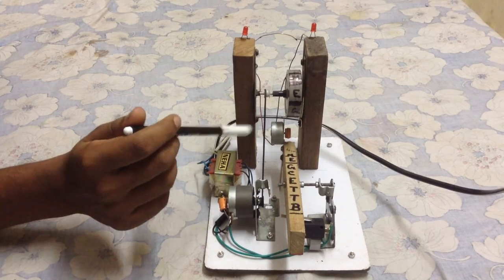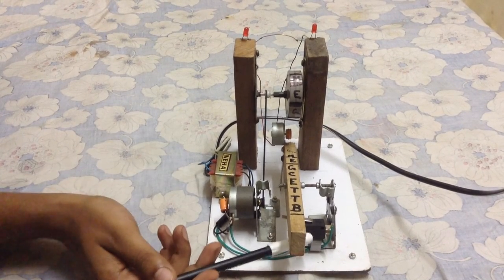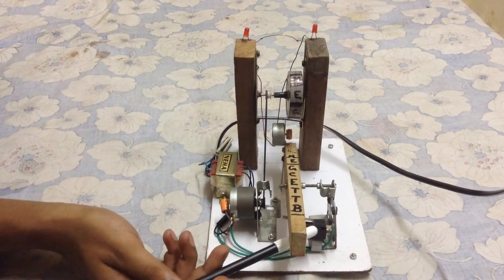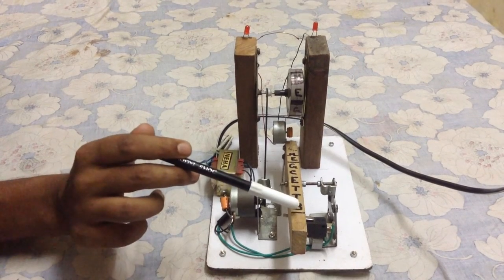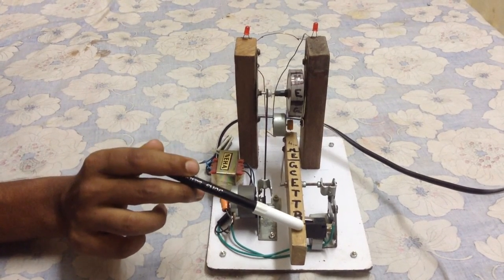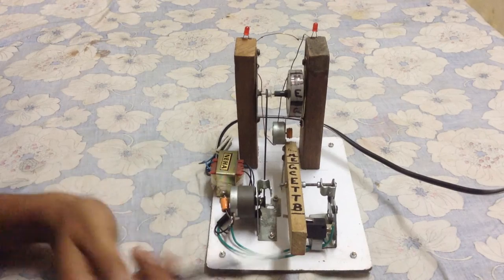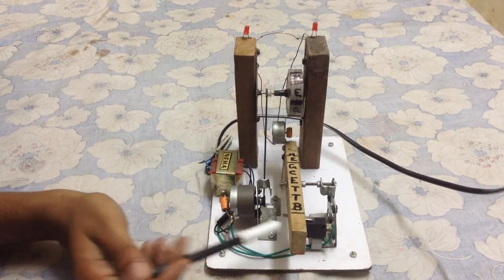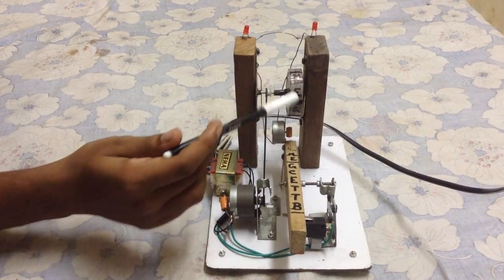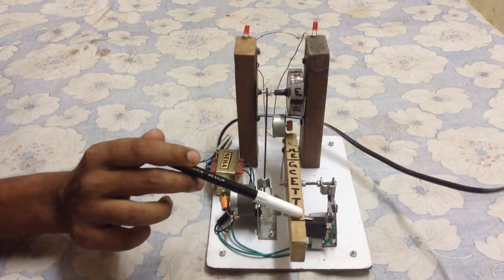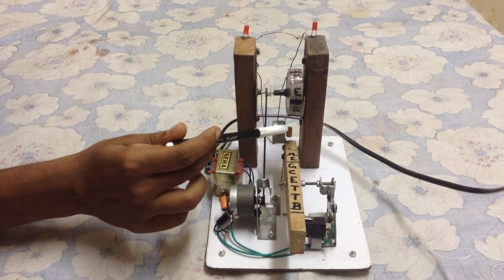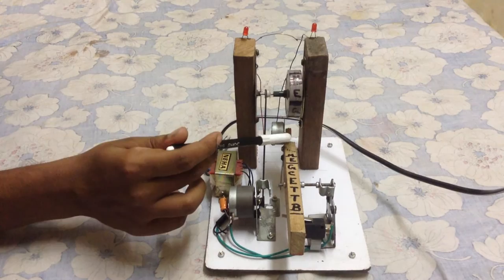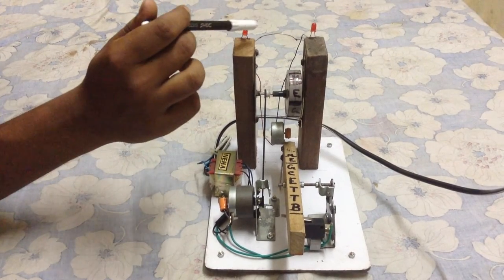We used a single pole single throw switch in place of the brake system. When the brake is applied with the help of a lever, first the motor gets switched off—that is the clutching phenomenon. The dynamo comes in touch with the flywheel and the momentum of the flywheel is transmitted to the shaft of the dynamo and converted into electricity, which is used to power two LED lights.